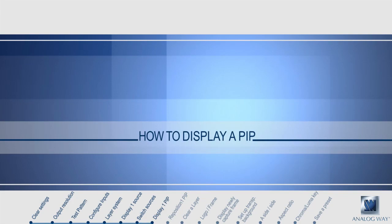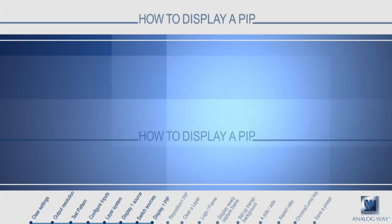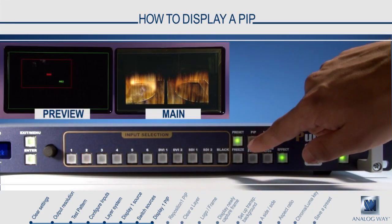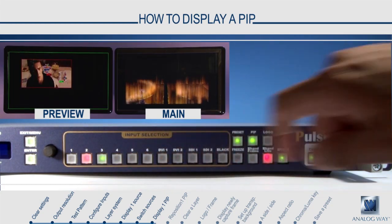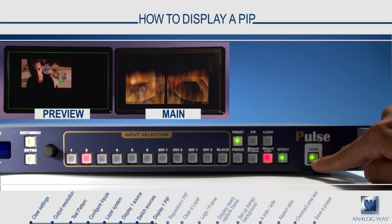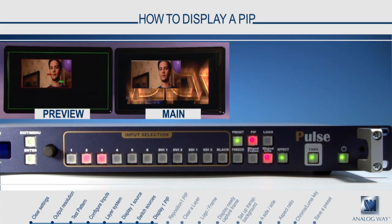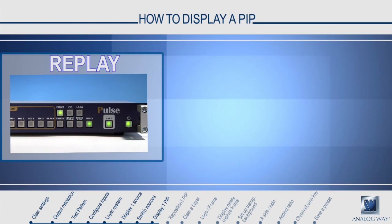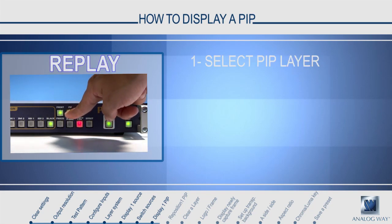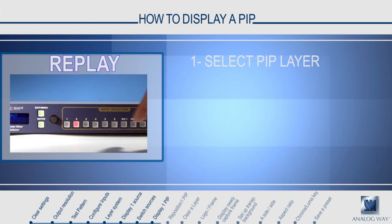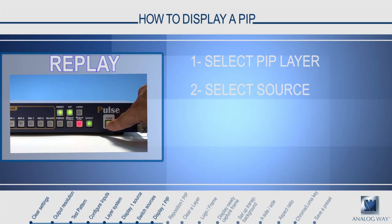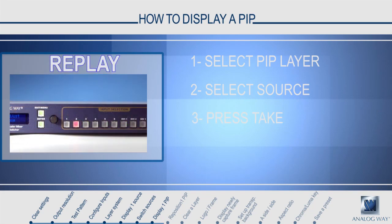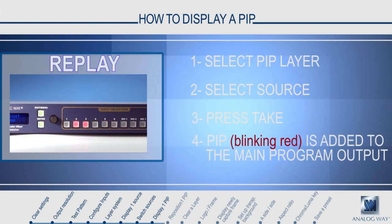How to display a PIP. First, select the PIP layer. Then select a source you wish to see in the PIP. Press take to transition the PIP to the main screen. Let's see that again: press the PIP layer, then press the source you wish to add, and press the take button. Your PIP will appear on the main program screen. You can tell that the PIP is in use because it will be in red.